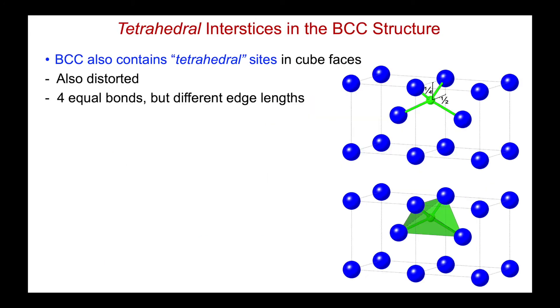The BCC structure also contains a set of tetrahedral interstices. These tetrahedral sites lie in the faces of the cube, and they can be found at this position, one quarter and a half right here. And there's several of them. Here we can see the four nearest neighbors to such an interstice. Below here is my polyhedral view, outlining the tetrahedron. The tetrahedron is actually not ideal. It doesn't have ideal tetrahedral angles. But at least these four bond lengths are equal.